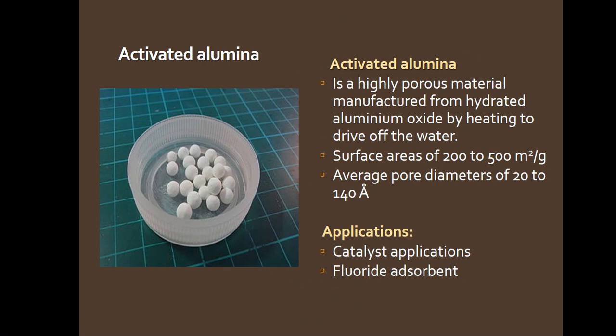We have activated alumina — a highly porous material manufactured from hydrated aluminum oxide by heating to drive off the water. Surface area ranges from 200 to 500 square meters per gram with an average pore diameter of 20 to 140 angstroms. Applications include use as a catalyst and as a fluoride adsorbent — taking out fluoride from a particular fluid mixture.